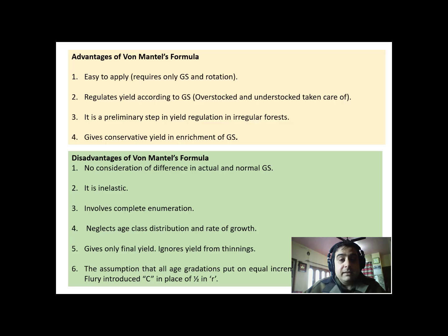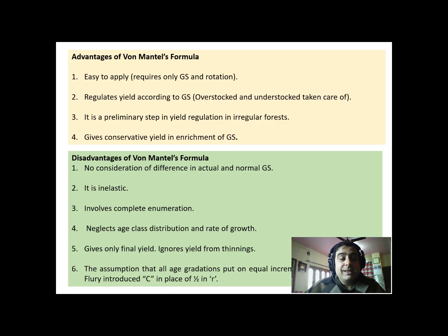Moreover, this formula can be applied only in regular forests which are uniform or even-aged, but it cannot be used in irregular forests. However, before applying any other method to irregular forests, this is the best method to get a rough idea of how much can be extracted, so it has an application in irregular forests as well. It gives a conservative yield and enriches growing stock, as it doesn't pay attention to other factors, and when maintained sustainably over time it leads to enrichment of growing stock.